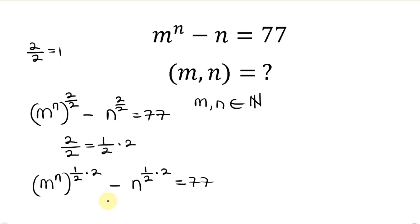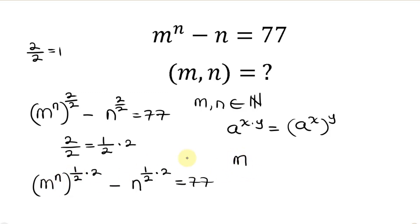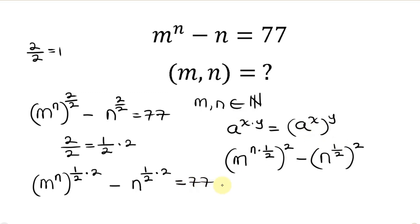Our next step will be to apply the property of indices that says when I have a to the x times y, this can also be written as a to the x, raised to the y. So the exponents multiply. That means this becomes m to the n times 1 over 2, raised to the 2, minus n to the 1 over 2, raised to the 2, equal to 77.